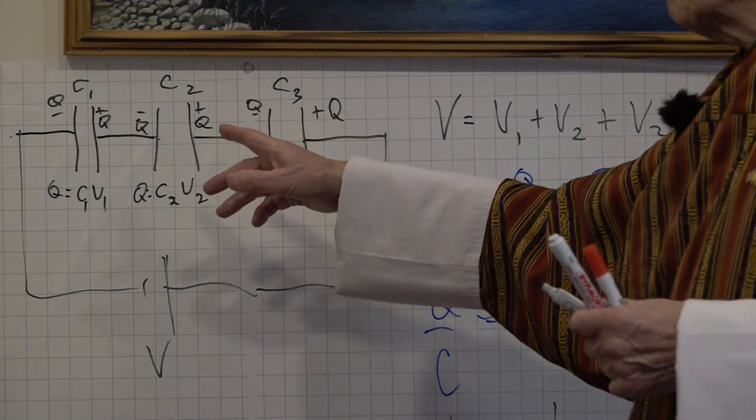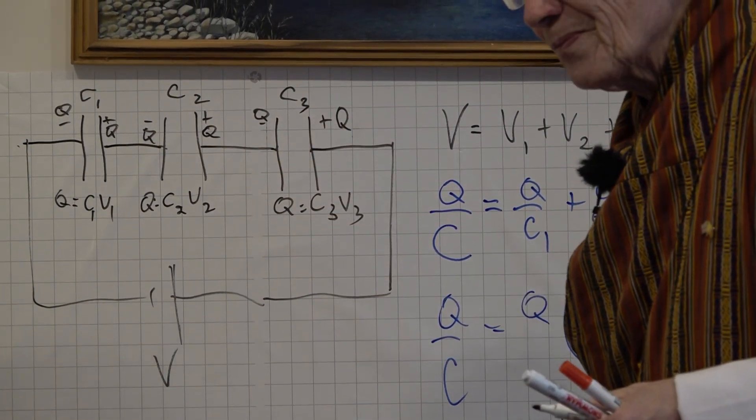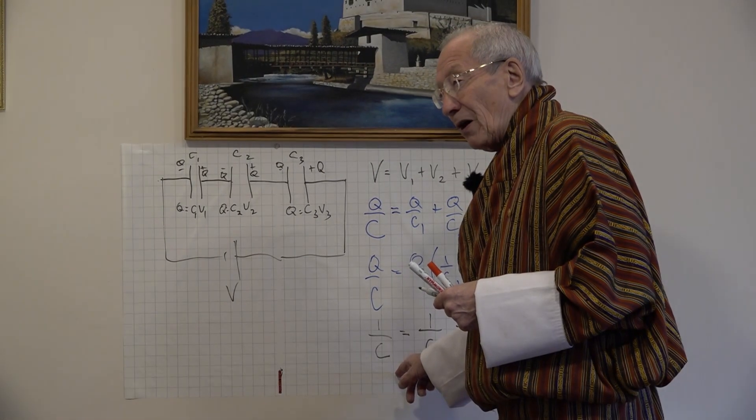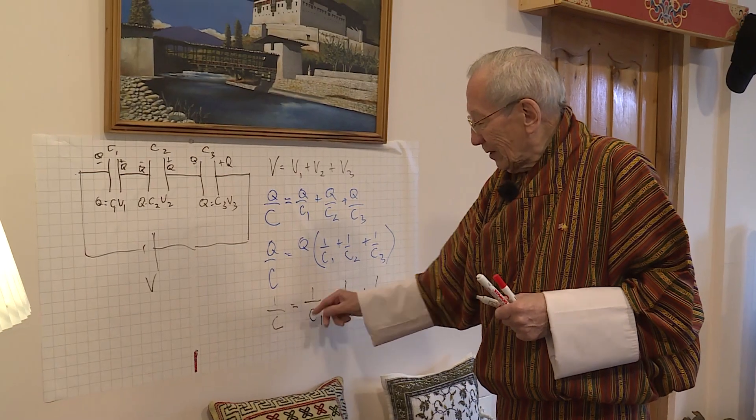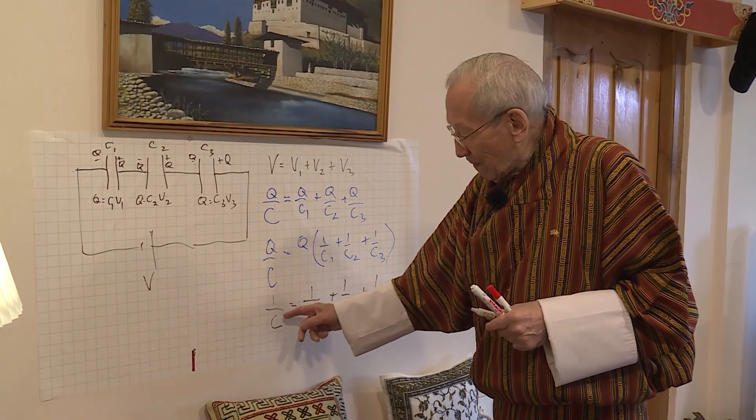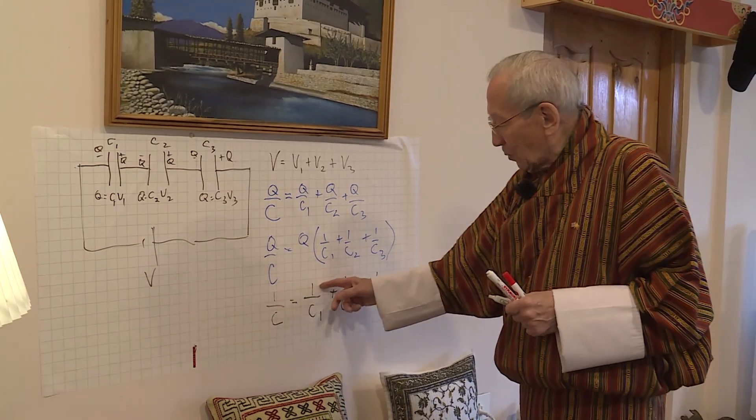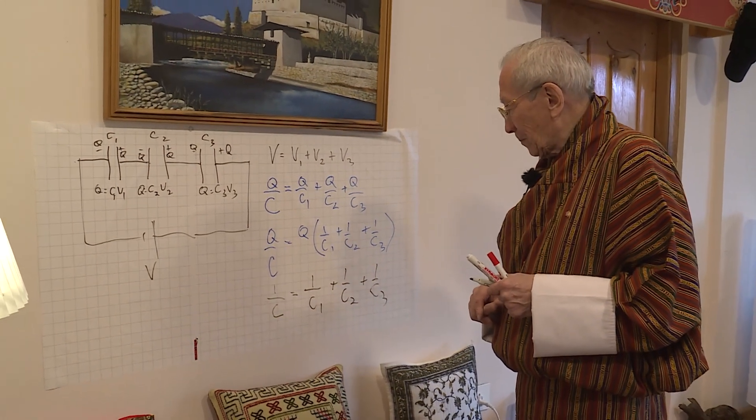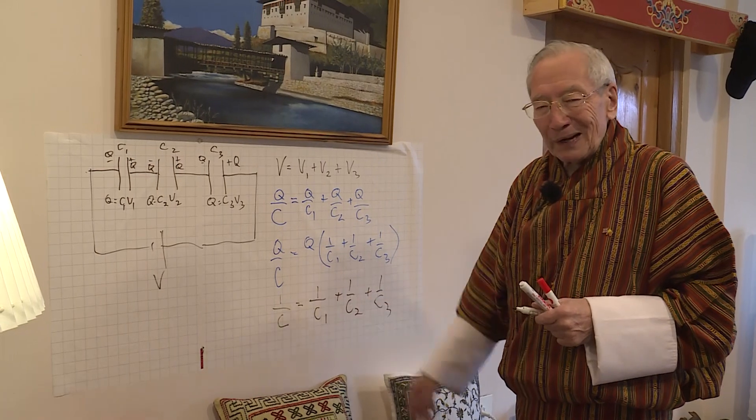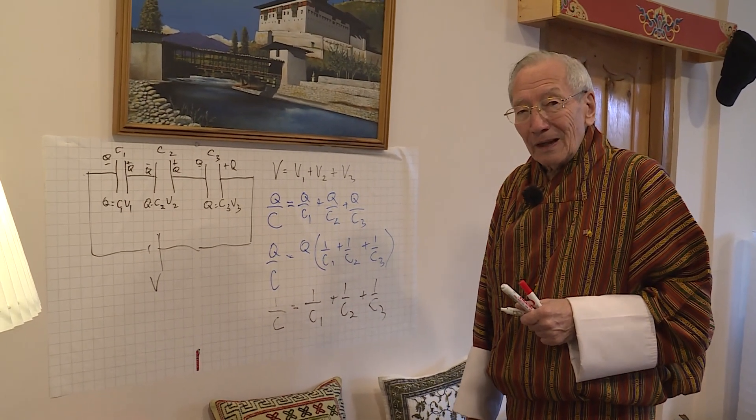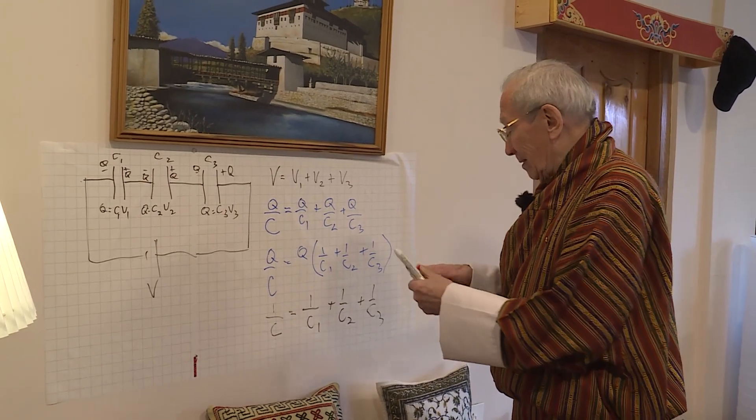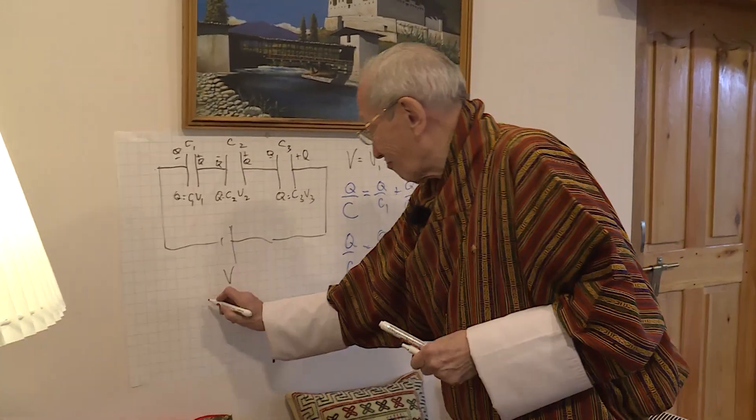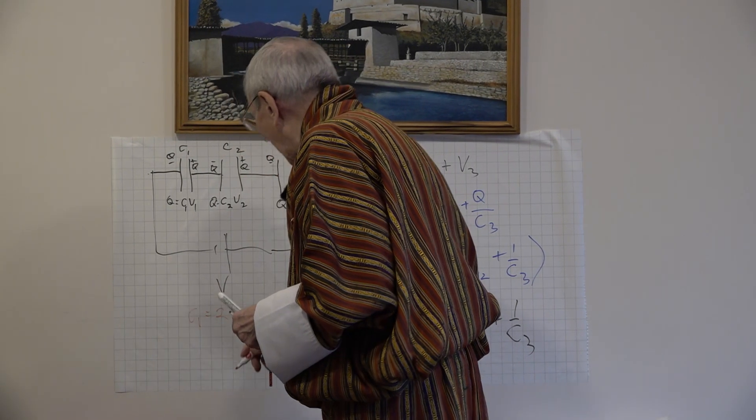So, if I have got capacitors in series, to find out the value of the single capacitor that they are equal to, I have to use the 1 over style. 1 over the single capacitor equals 1 over C1 plus 1 over C2 plus 1 over C3. And that may look a bit complicated, but it's not.